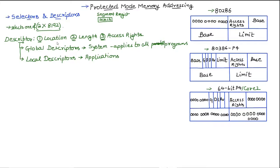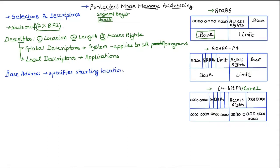Now we are going to discuss the location and the length. To specify the location, we want to specify the starting location. If you take a look at these structures, you can see we have a base address. The base address is used to specify the starting location of the memory segment that we are trying to address.